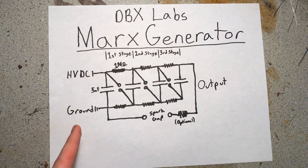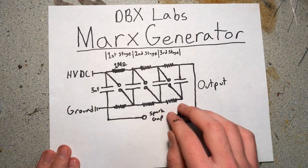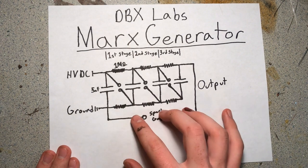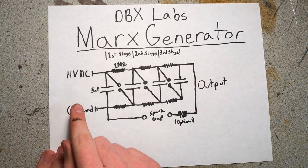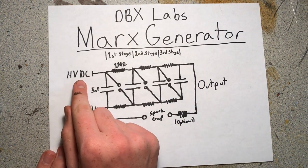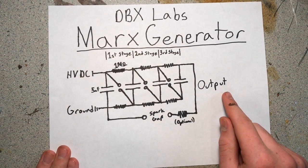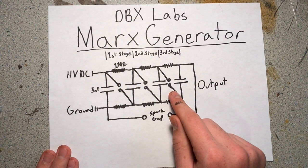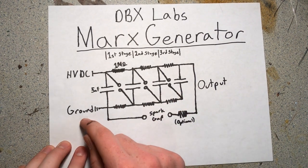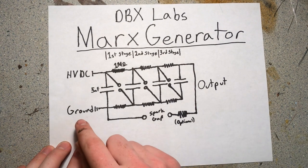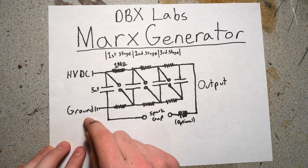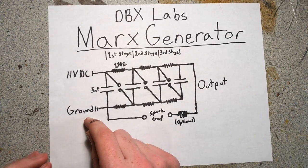A Marx generator basically composes of a multi-stage circuit which has an input of either lower high-voltage DC, an output of much higher voltage DC depending on how many stages there are, and unlike other step-up circuits, its other input is ground. It doesn't have to be AC.